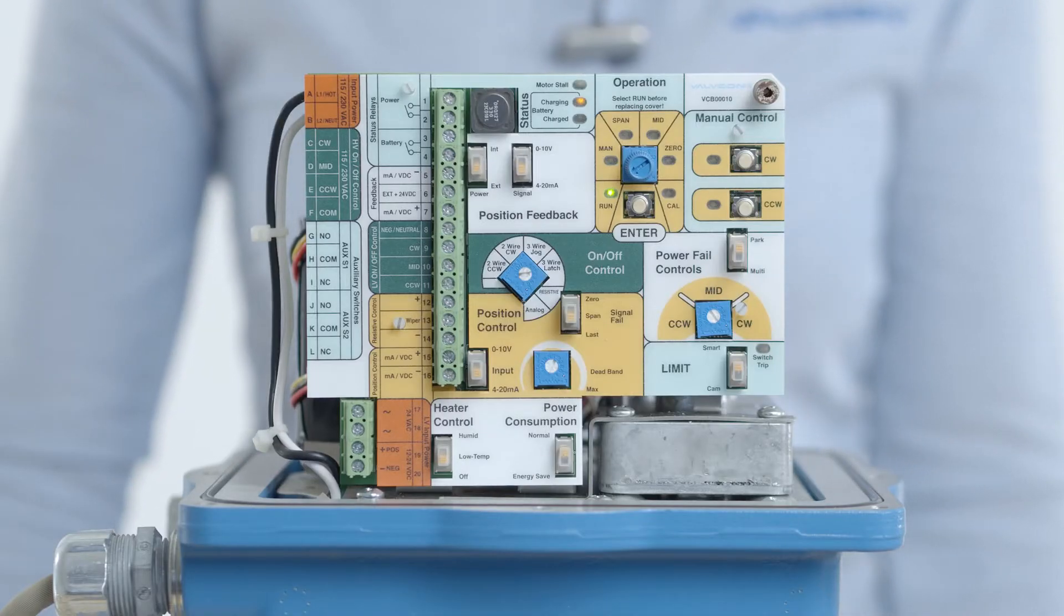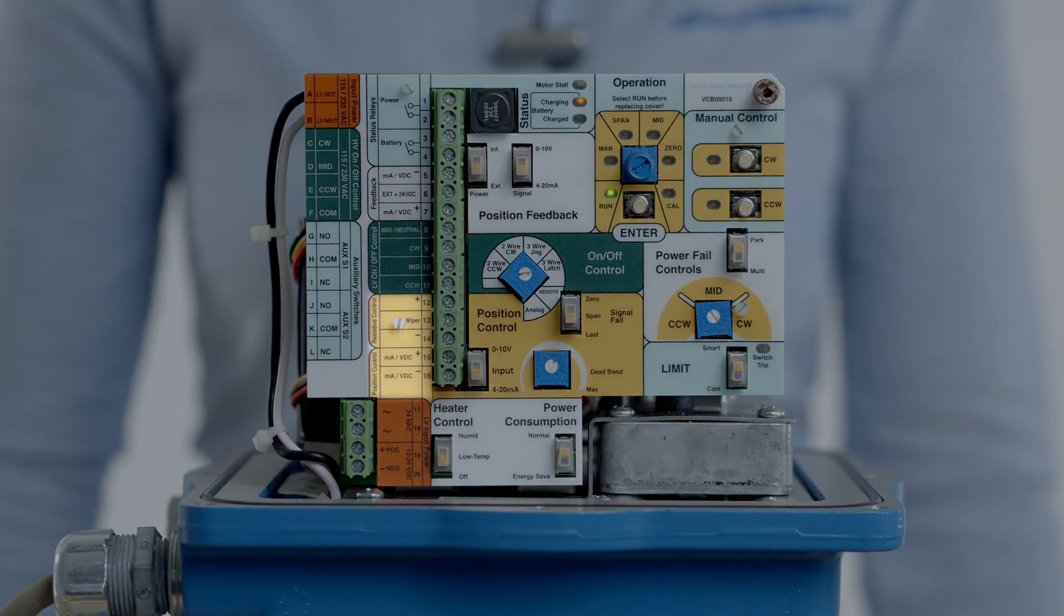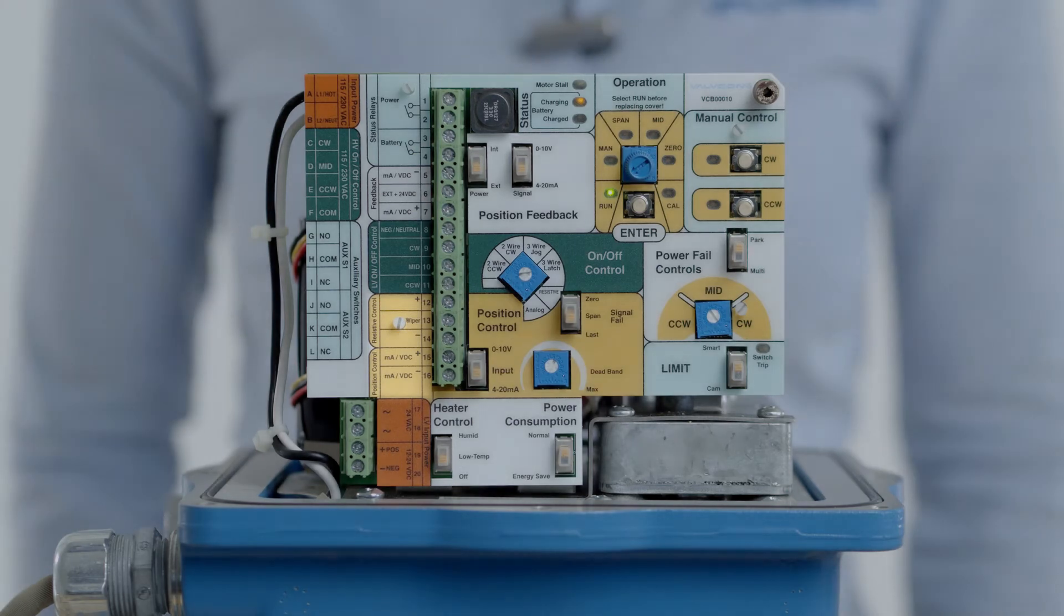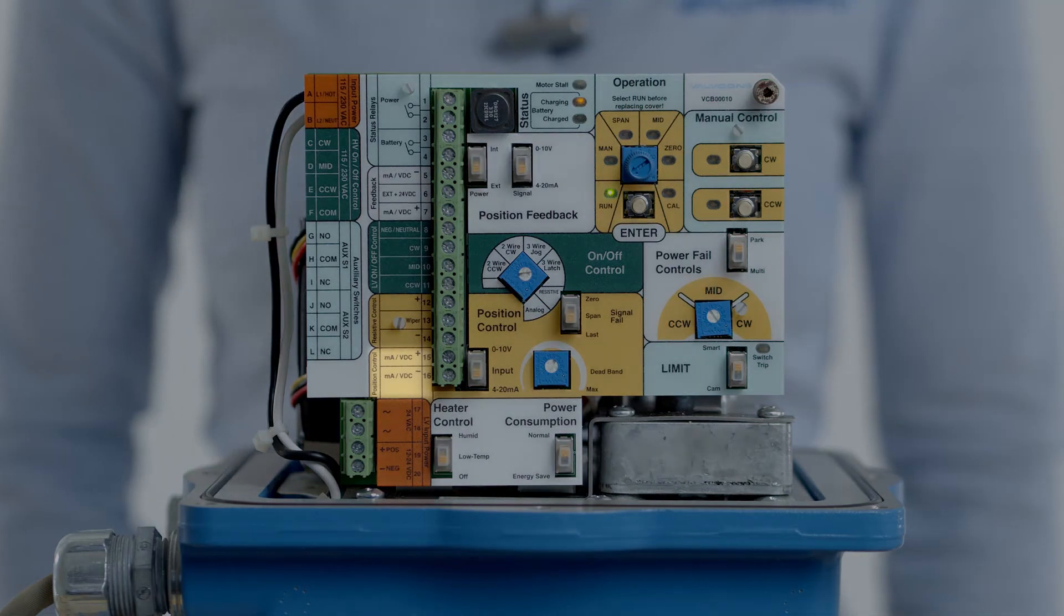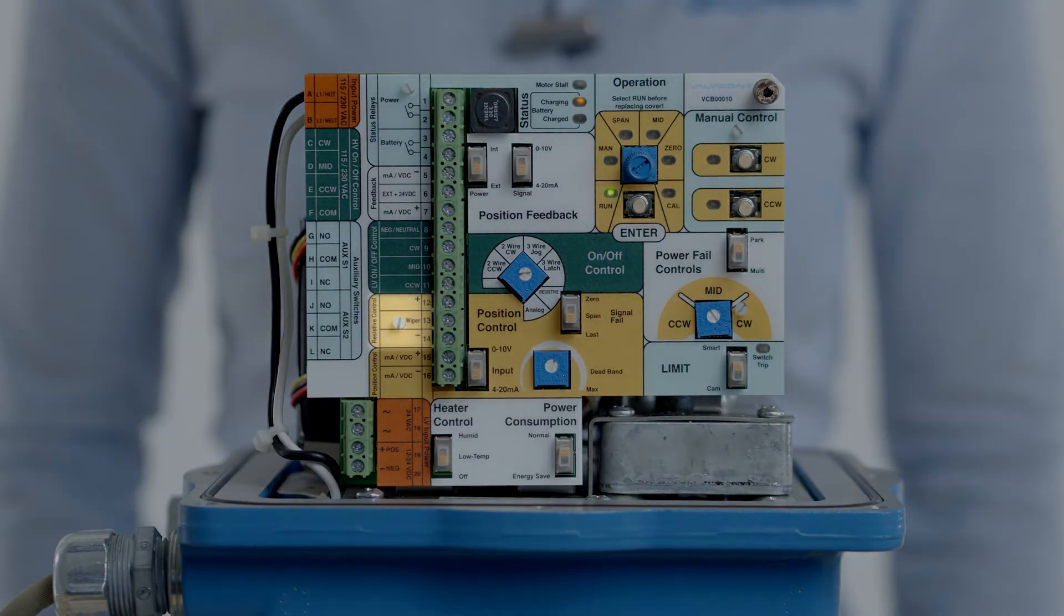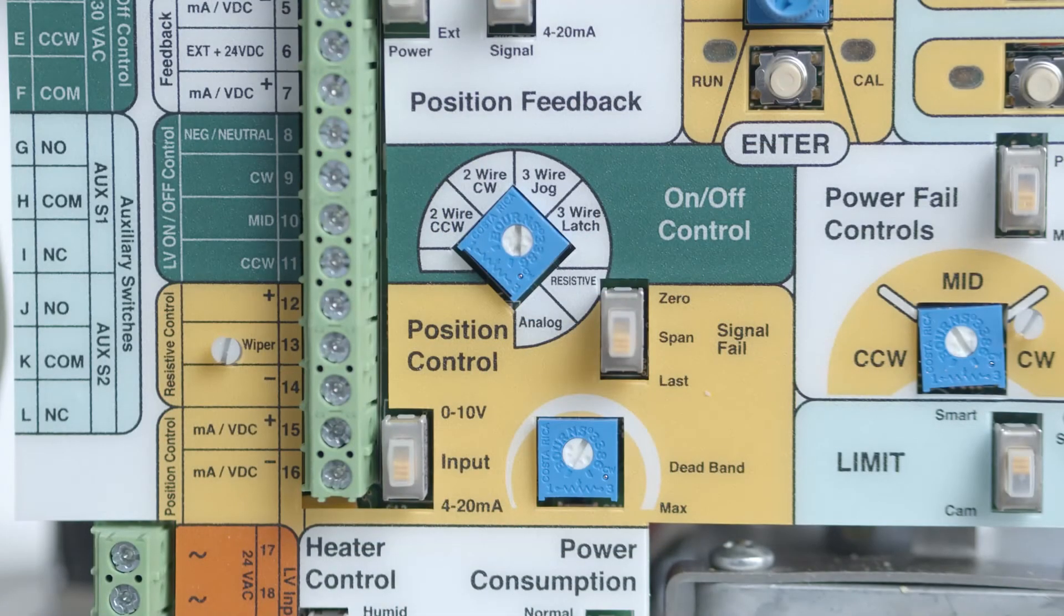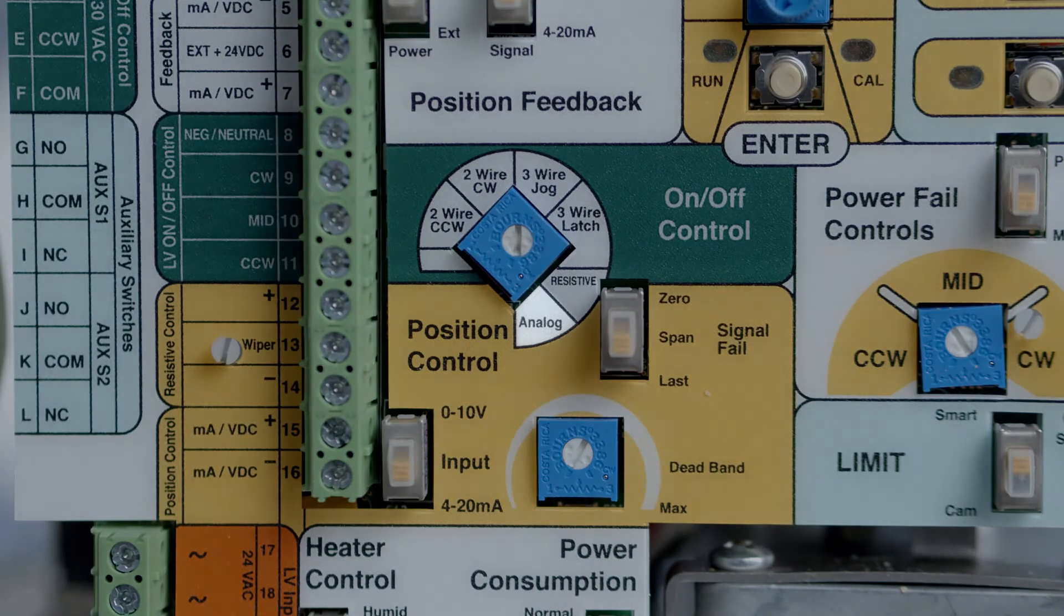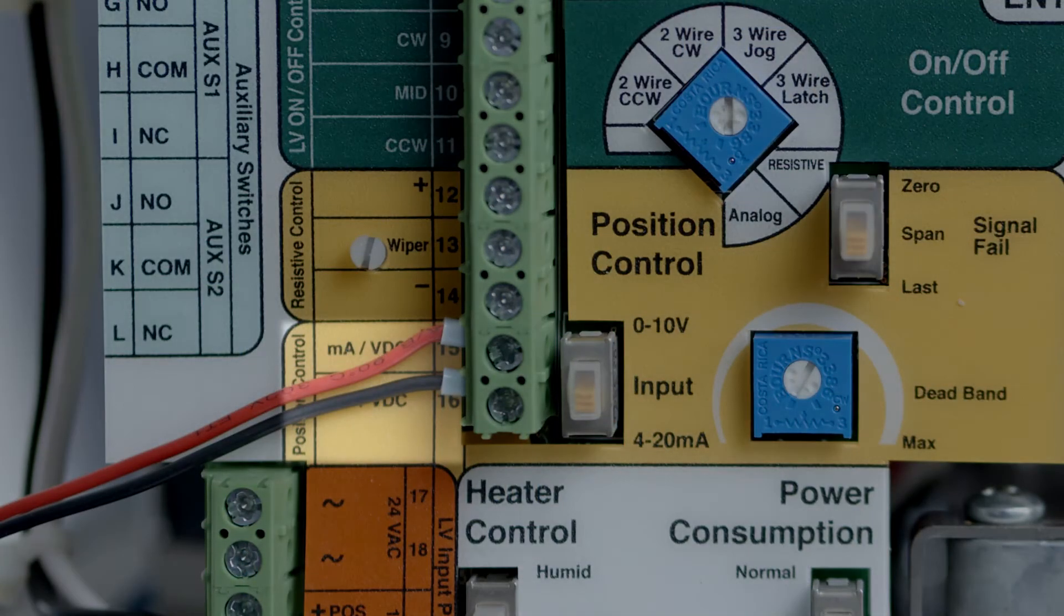Alternatively, the actuator can be configured for position control mode. Position control mode allows the actuator to modulate or change position in response to a change in an analog or resistive control signal. The actuator accepts either a 4 to 20 milliamp or 0 to 10 volt DC analog signal. To use 4 to 20 milliamps or 0 to 10 volts DC, select analog in the position control region of the mode selector. The input control signal connects to terminals 15 and 16.